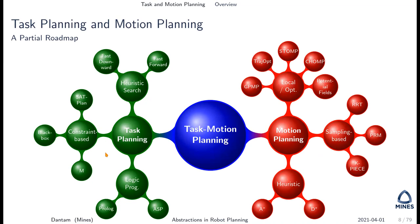You need a different kind of search to efficiently deal with large discrete or symbolic spaces compared to large configuration spaces, which we deal with in motion planning through sampling-based or optimization-based methods. The question in task and motion planning is how to efficiently search the combined space with both the discrete symbolic and continuous geometric parts.